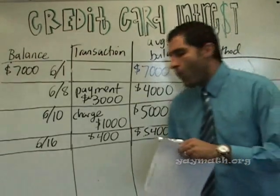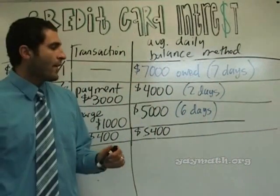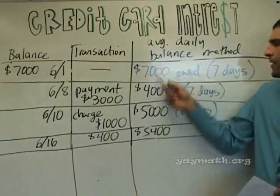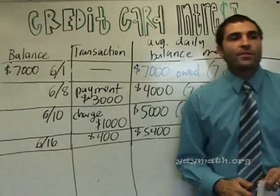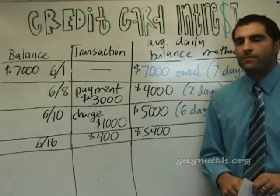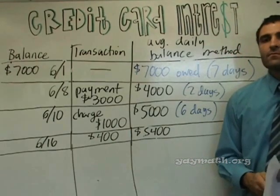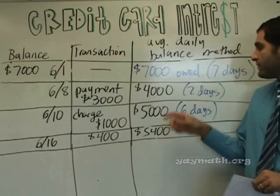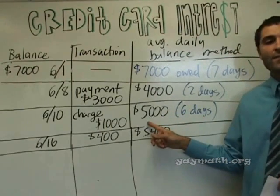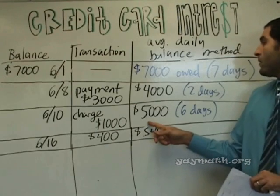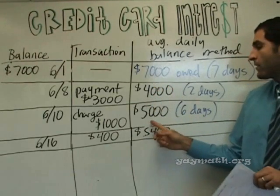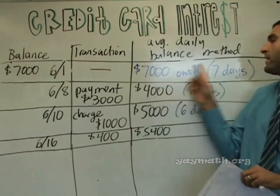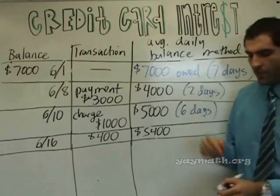Any questions about why we're doing this? We're about halfway through the month — about how much did we owe on average per day? A student guesses $4,500. The teacher says maybe around $5,000, because we owed $5,000 for a really long time, and also owed $7,000 for a week, so the average might even be more than $5,000. Let's keep going for the rest of the month.